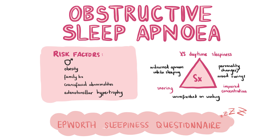Patients will present with core symptoms: excessive daytime sleepiness, snoring, and/or impaired concentration. They may also have additional symptoms like mood swings, personality changes, feeling unrefreshed on waking, and witnessed apneas while sleeping. In children, additional symptoms include unusual sleep posture — for example the head bent backwards — nocturnal enuresis, failure to thrive, and daytime mouth breathing.